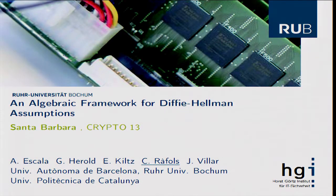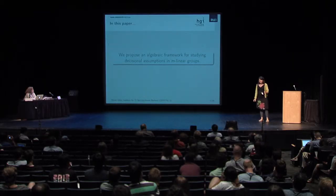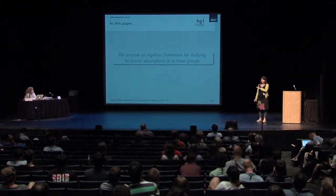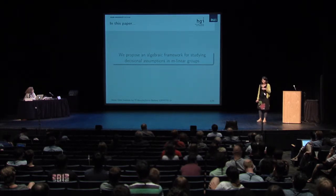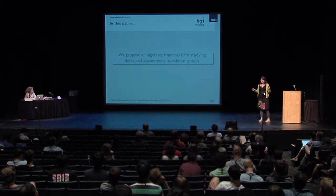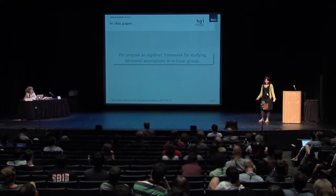Hello. As the title says, what we do in this paper is propose a new algebraic framework for studying decisional assumptions in M-linear groups. I would like to start with a disclaimer: we're not saying that this model applies to the new recent candidate multilinear maps. We're studying M-linear groups generically, but our results do apply to standard bilinear groups.